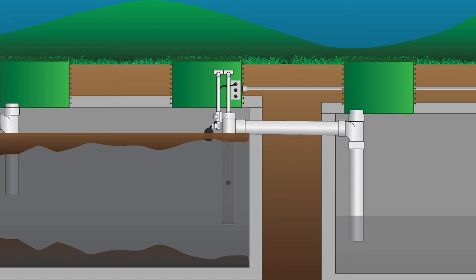Another advantage of an effluent filter is if you happen to neglect your septic tank and the sludge and scum layers begin to build up over time and start to enter the effluent filter, the effluent filter will stop that activity and keep solid material from being pushed out to the drain field. Alternatively, with just a sanitary tee, that solid material would fill up the dose tank, possibly plug the pump depending on its solids-handling capability, and quite a bit could eventually reach the drain field, causing serious drain field issues.